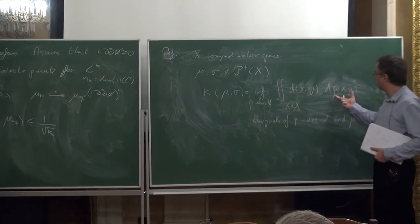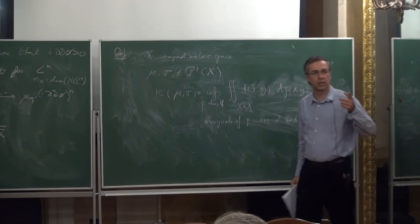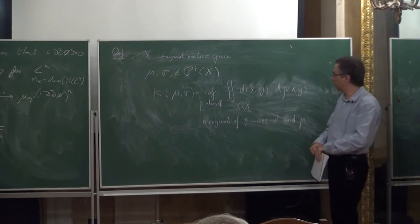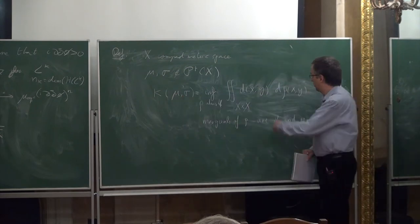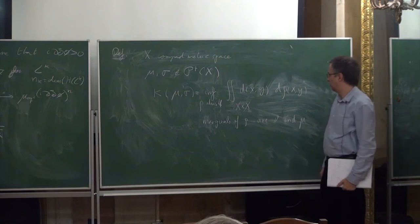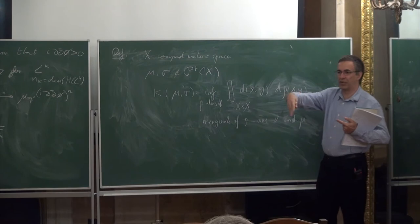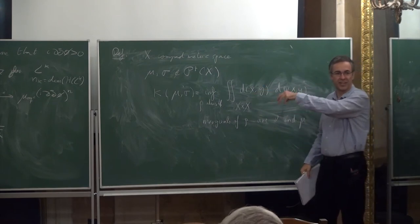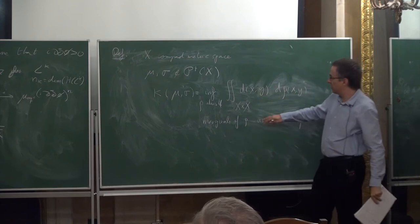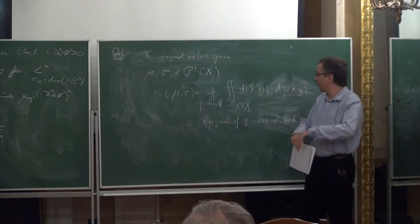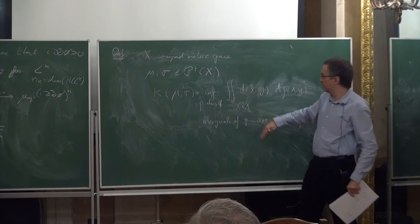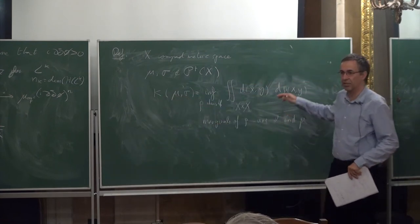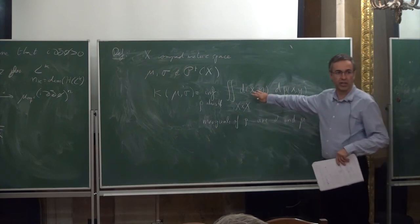This is measuring how much it costs to transport a distribution mu to a distribution sigma. As Villani says: suppose you are in Paris with plenty of bakeries and plenty of cafes. Croissants are produced in the bakeries and consumed in the cafes. You want to minimize the cost of transporting all the croissants from the bakeries to the cafes. That is the Kantorovich distance — an optimal way of distributing things so that total cost is minimized.